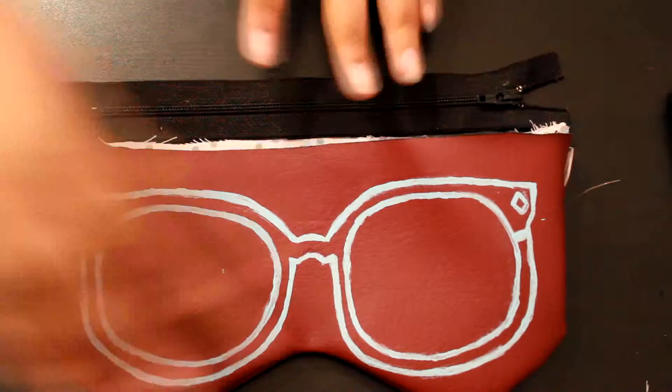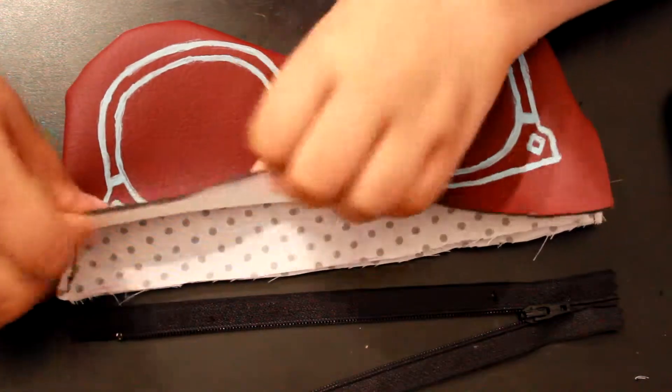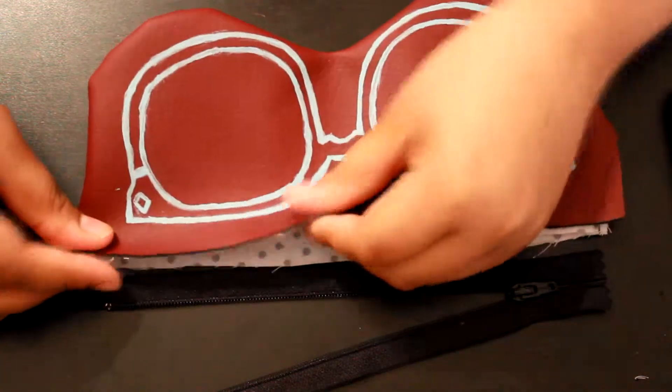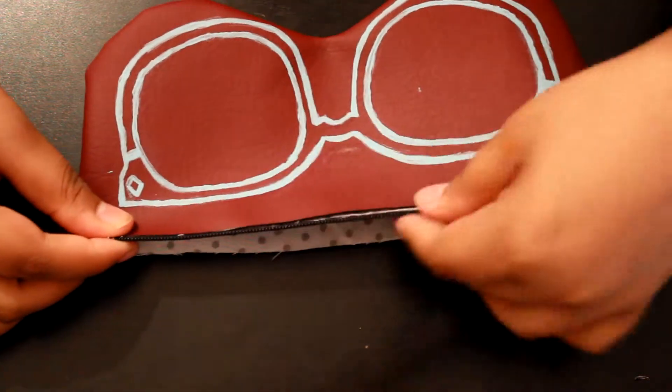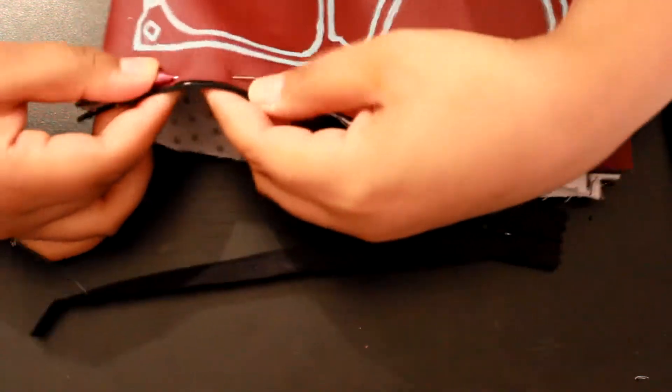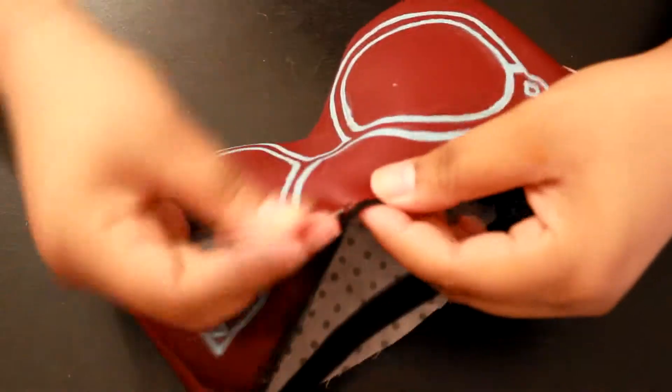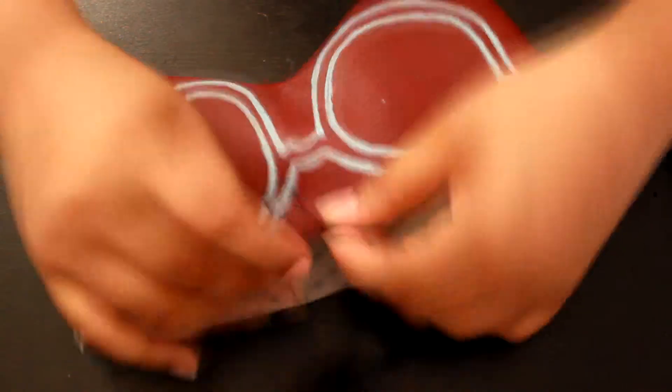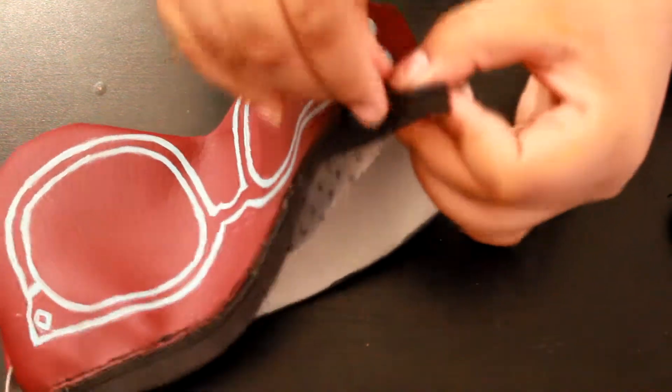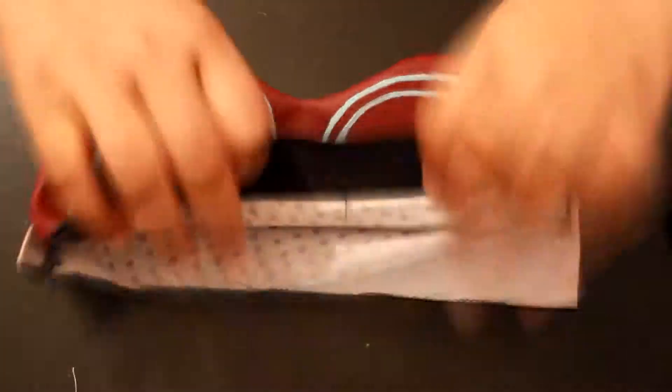Now it's time for the zipper. Unzip the zipper and take both the leather fabric and the inside fabric and place it on top of the side of the zipper. I'm going to pin this in place so that it doesn't move around when I'm sewing. By the way, I'm going to be hand sewing this, but you can also use a sewing machine. Once you're completely done sewing one side, just unzip the zipper to see if it works. And then pull the fabric inside out again to sew the rest of the leather fabric.